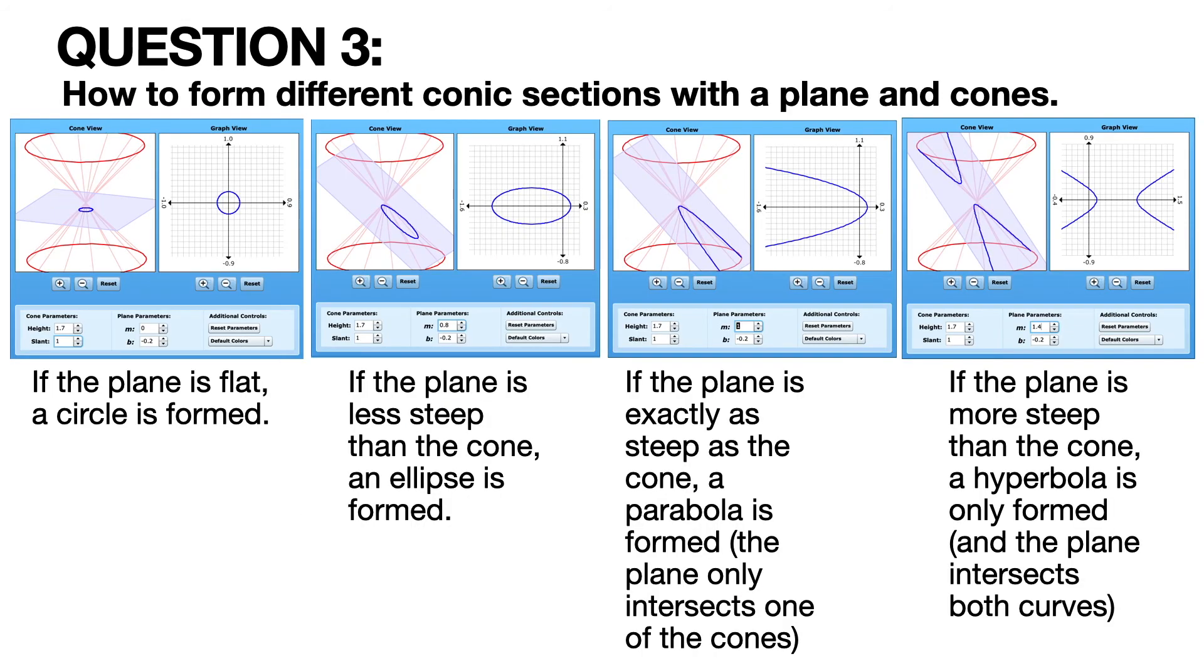Question three, how do you form different conic sections with a plane and a cone, or two cones? So it really all depends on the steepness of the plane. If the plane is flat, a circle is formed. If the plane is less steep than the cone, then an ellipse is formed. If the steepness of the cone and the plane are exactly the same, then a parabola is formed.